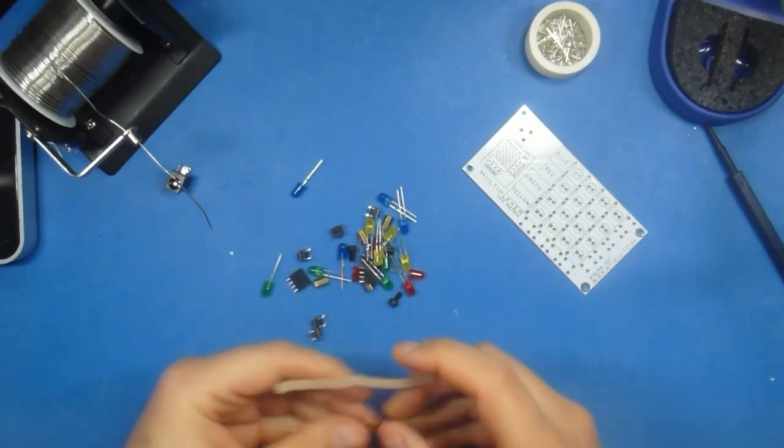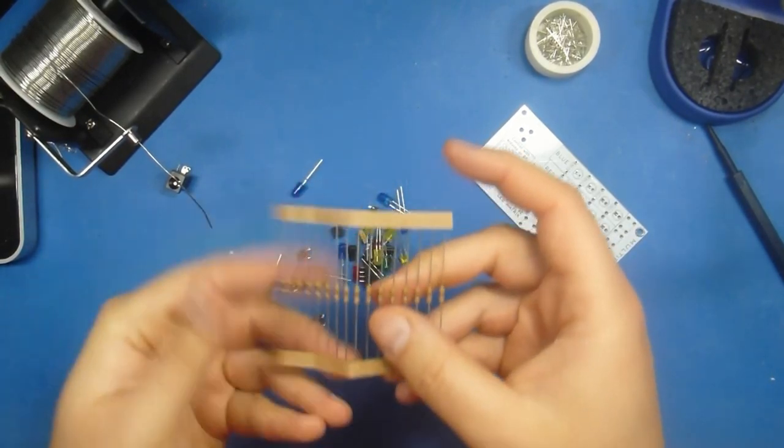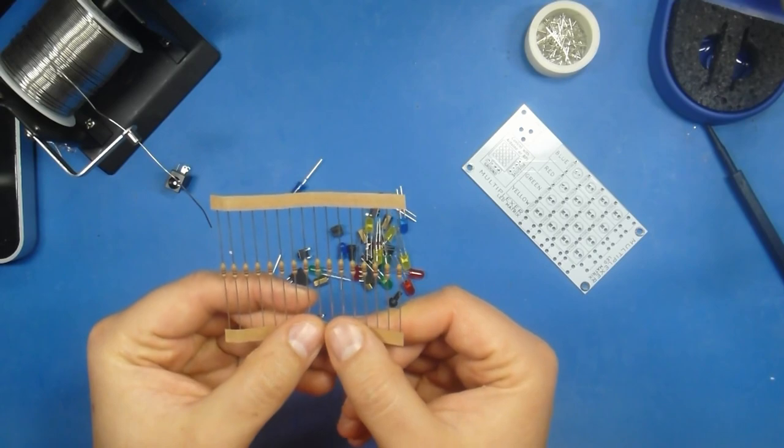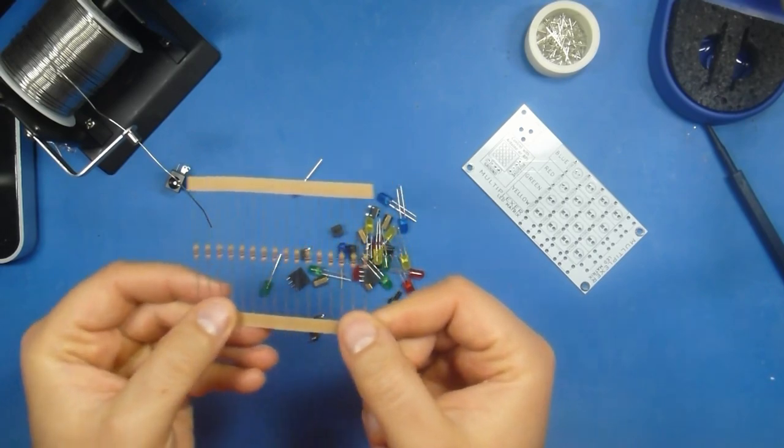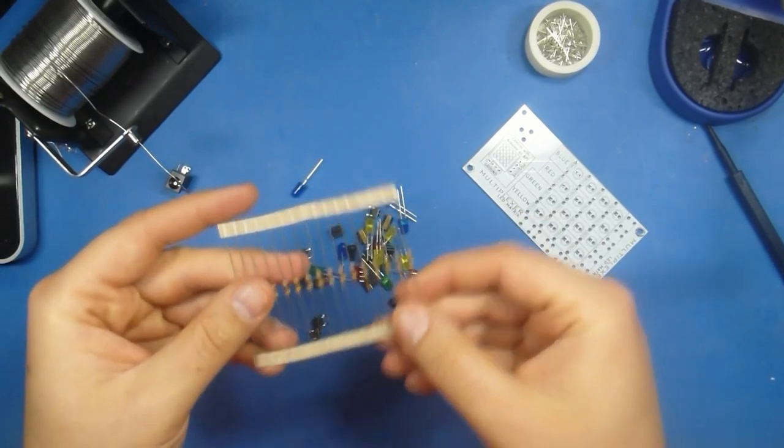We have several resistors all strung together. These are all 470 ohm resistors, and they'll all be bound together like this.